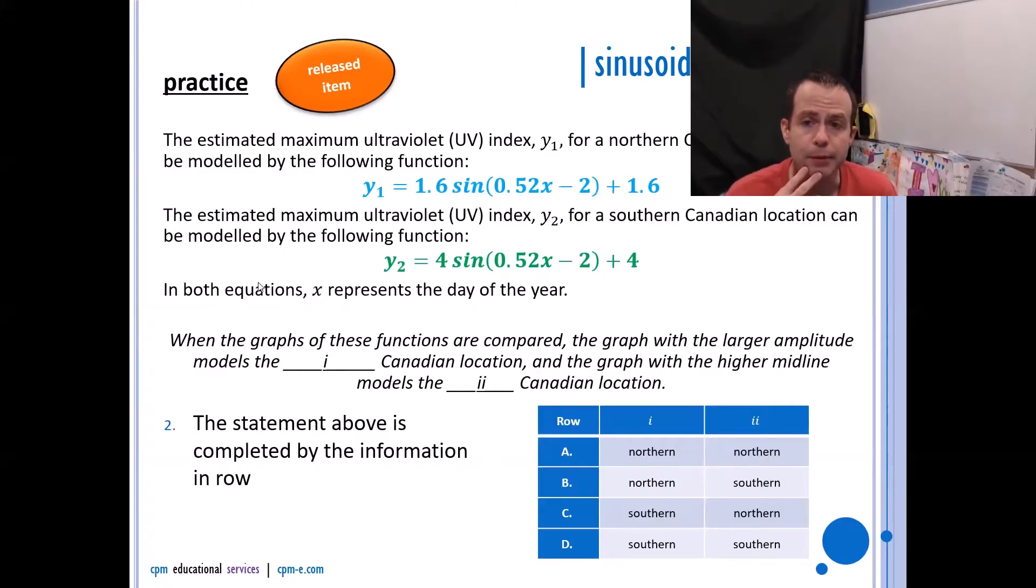The estimated maximum ultraviolet or UV index y1 for a northern Canadian location is this equation here. The estimated maximum UV index for a southern Canadian location is this guy here. In both equations, x represents the day of the year. When the graphs of these functions are compared, the graph with the larger amplitude—well, amplitude is a. So who's got the larger a value? Well, I got 1.6 and I got 4. So y2 has the larger a value, and y2 is the southern.